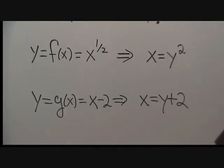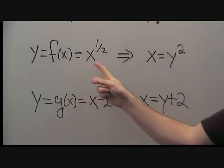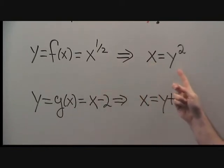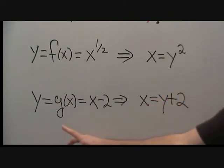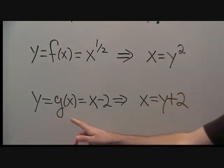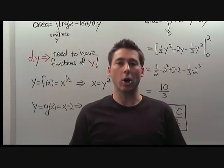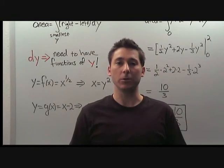We were given f(x) equals x to the one half. That can be rewritten as x equals y squared. We are also given y equals g(x), which is x minus 2. That can be rewritten as x equals y plus 2. Now we can put in our expressions for the right function and the left function and compute the integral.